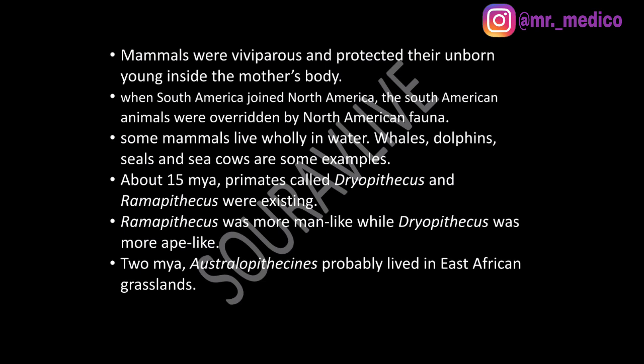The first mammals were like shrews. Mammals were viviparous and protected their unborn young inside the mother's body. Some mammals live wholly in water — whales, dolphins, seals, and sea cows are examples. About 15 million years ago, primates called Dryopithecus and Ramapithecus were existing. Ramapithecus was more man-like while Dryopithecus was more ape-like. About 2 million years ago, Australopithecus probably lived in East African grasslands.